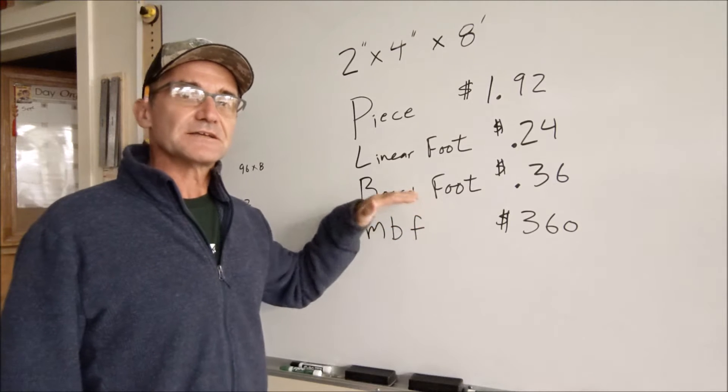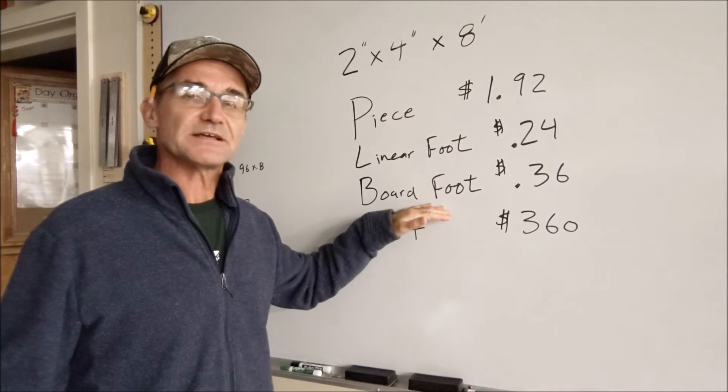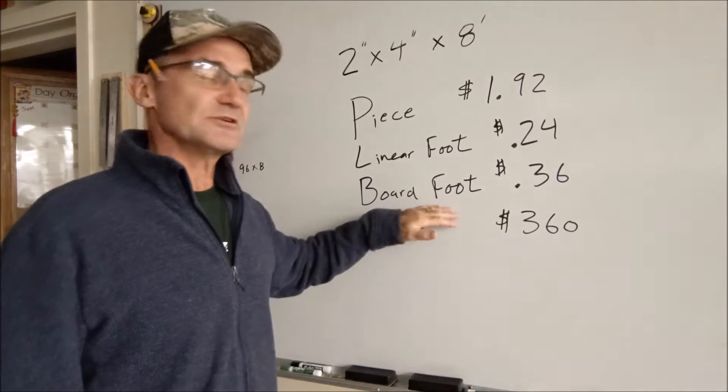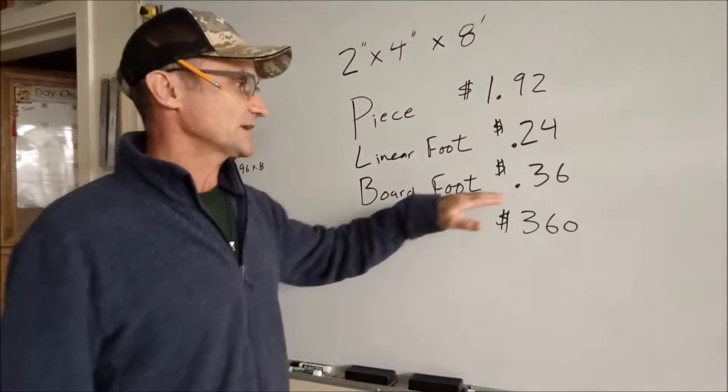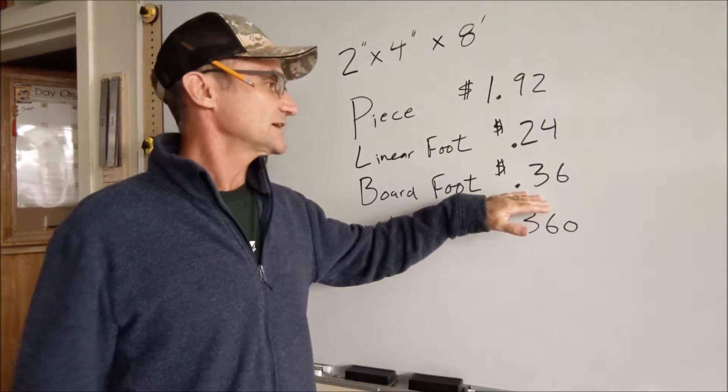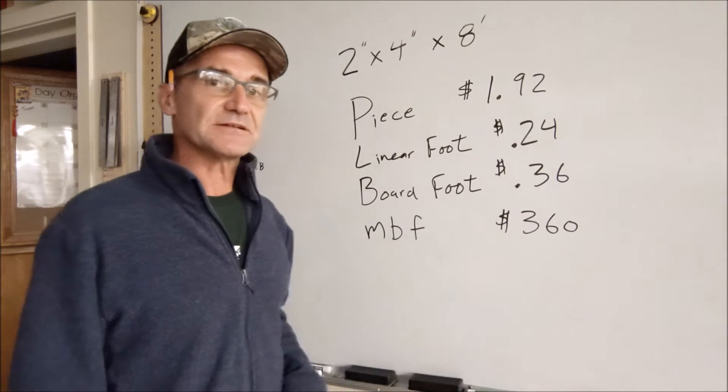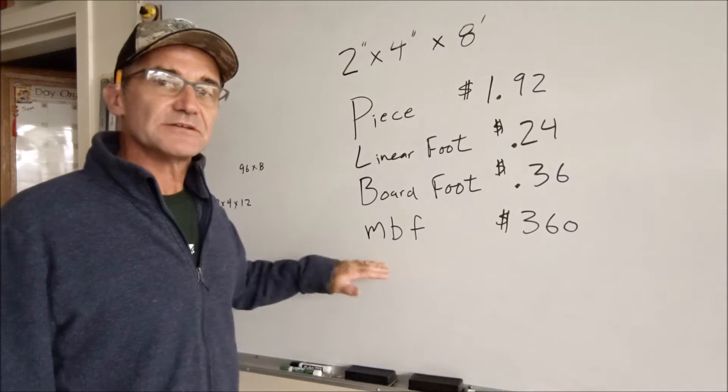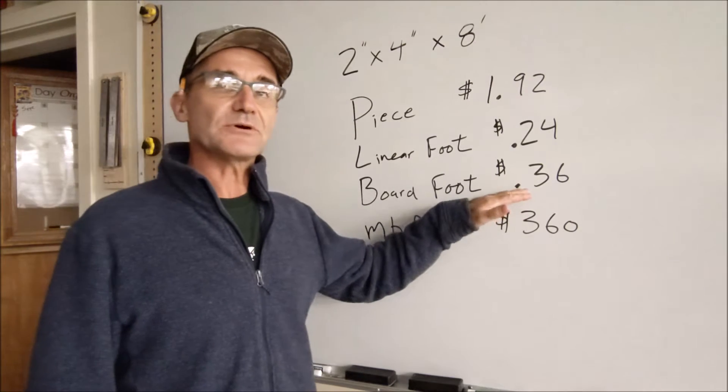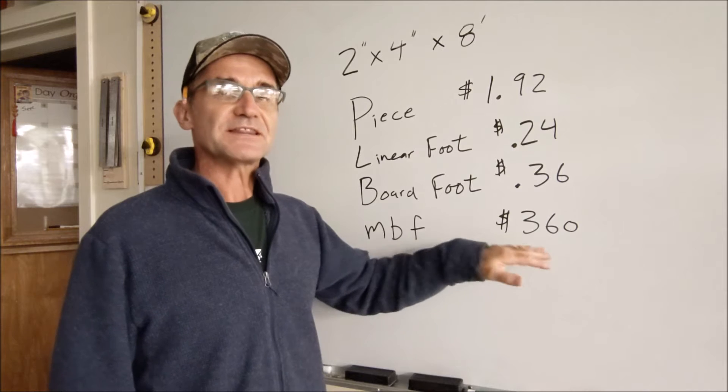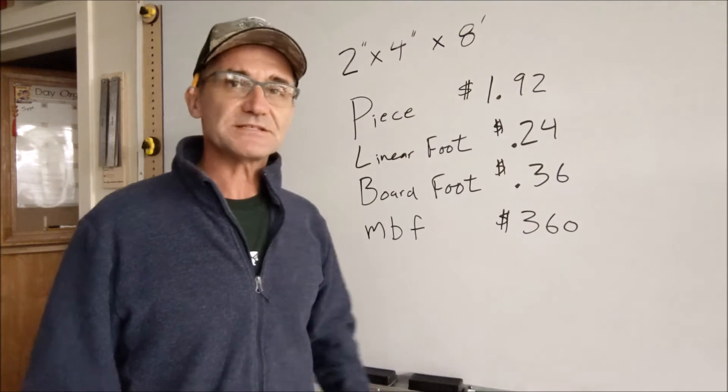By the board foot - this is a cubic measurement or a volume measurement. The way you figure out the board foot is length times width times depth and you get the total cubic inches, and then 144 cubic inches is one board foot. Let's say this board sells for 36 cents per board foot. That's another way to sell lumber. And then the fourth way to sell lumber is by the thousand board foot. Usually use MBF - M stands for mill, a thousand BF board feet. So that same board could sell for 360 dollars a thousand board feet. All four of these prices are exactly the same. They're just four different ways to price.